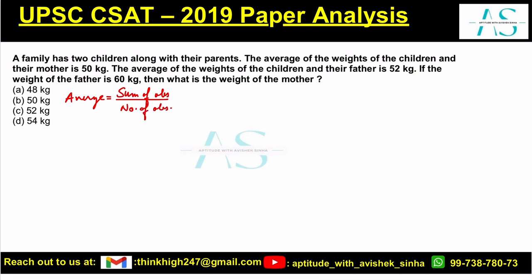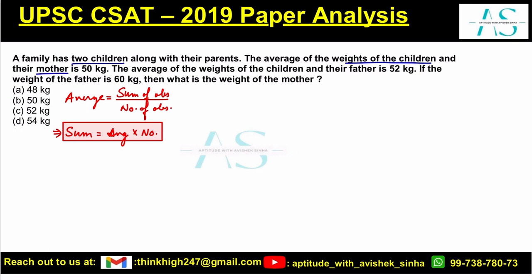From here we can easily say the sum is equal to average into the number of observations. Now let's start one by one. The average of the weights of the children and their mother — we have two children and their mother — is 50 kg.